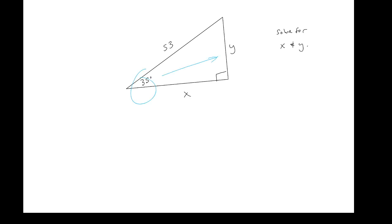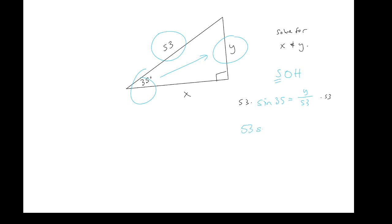Starting with the 35-degree angle: what's opposite 35? That's y. We know the hypotenuse, so we use opposite and hypotenuse — that's SOH, which is sine. The sine of 35 equals the opposite y over 53. Multiply both sides by 53: y equals 53 times sine of 35. That's your exact answer. Punch it into your calculator and you get approximately 30.4.